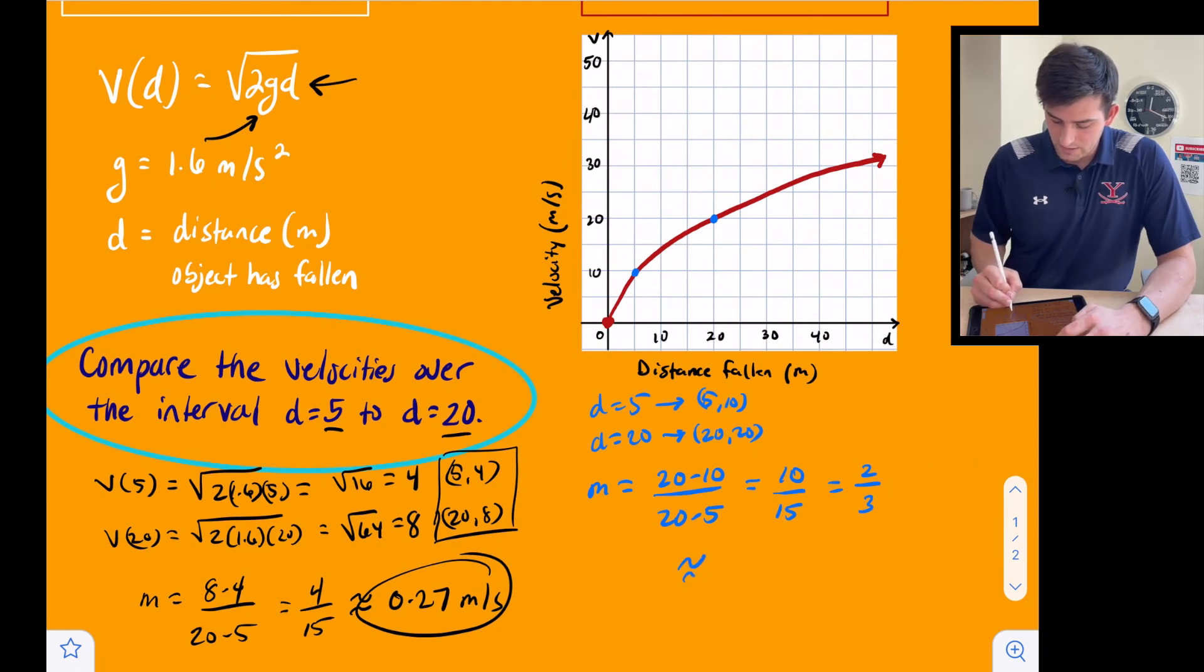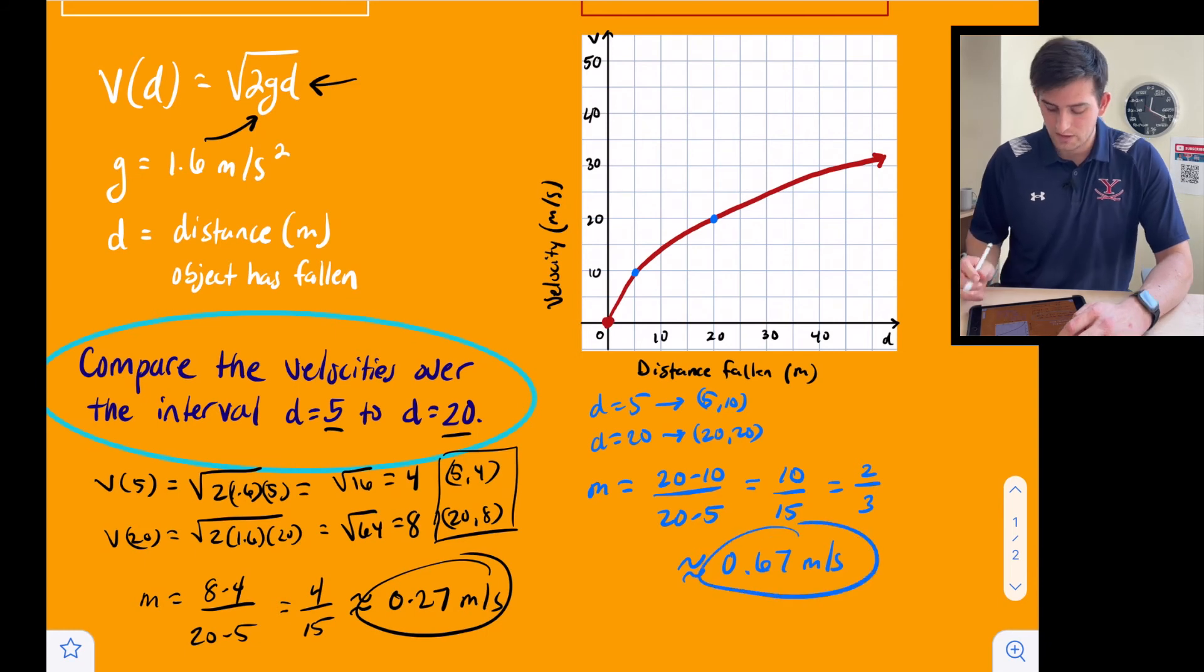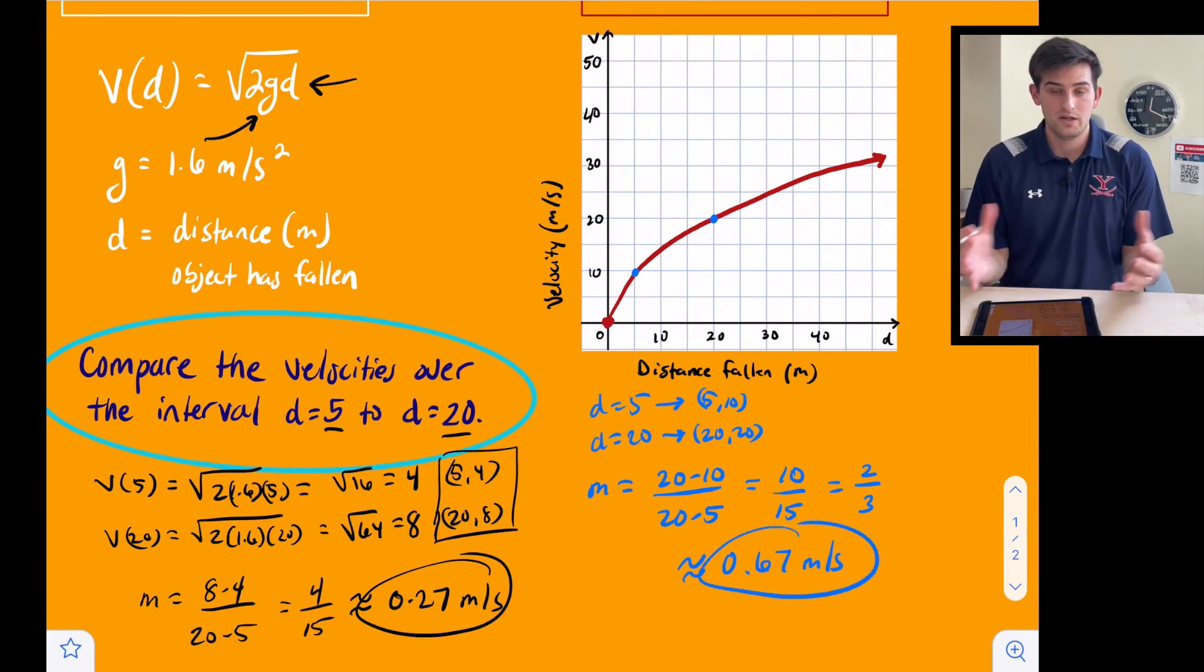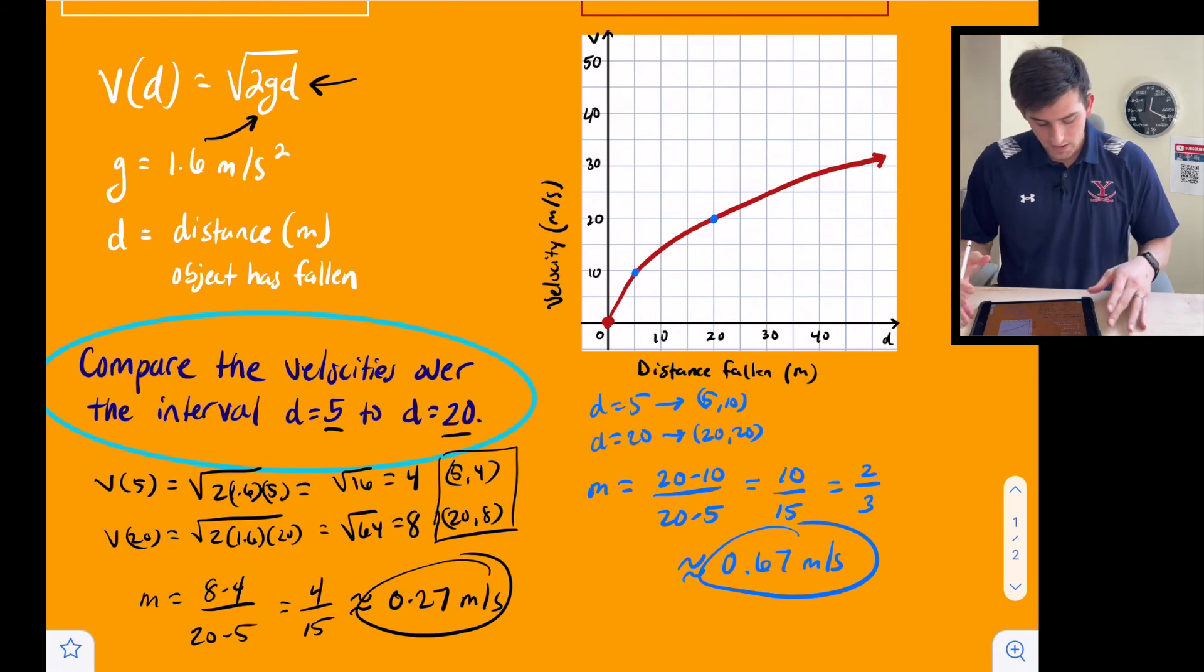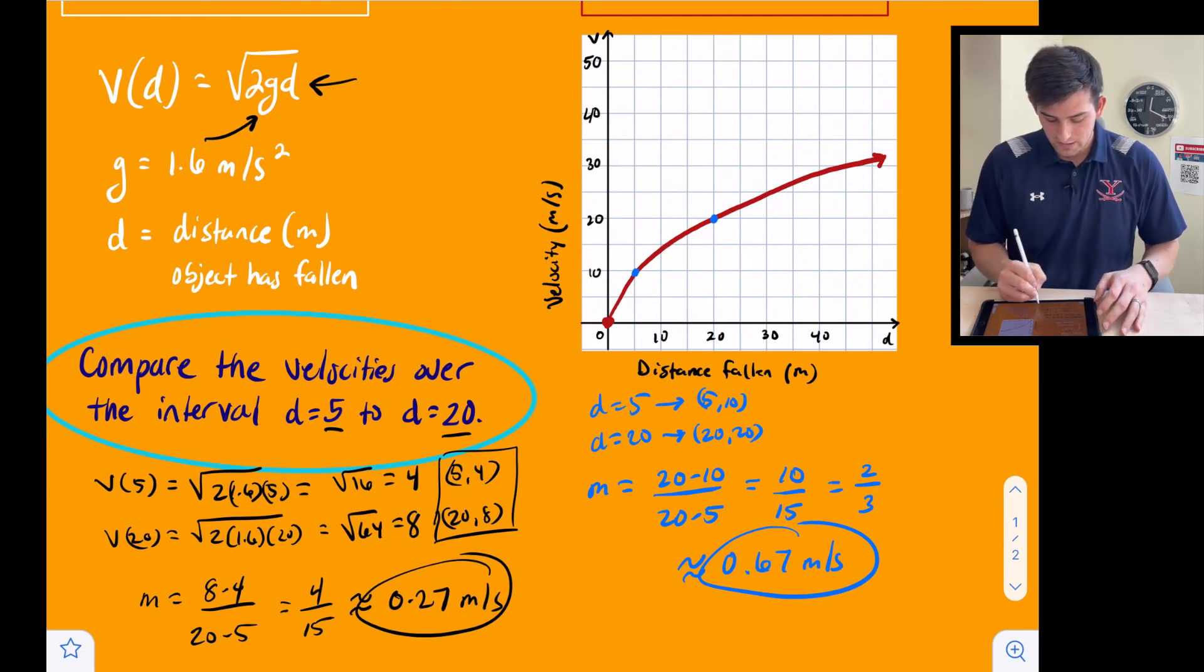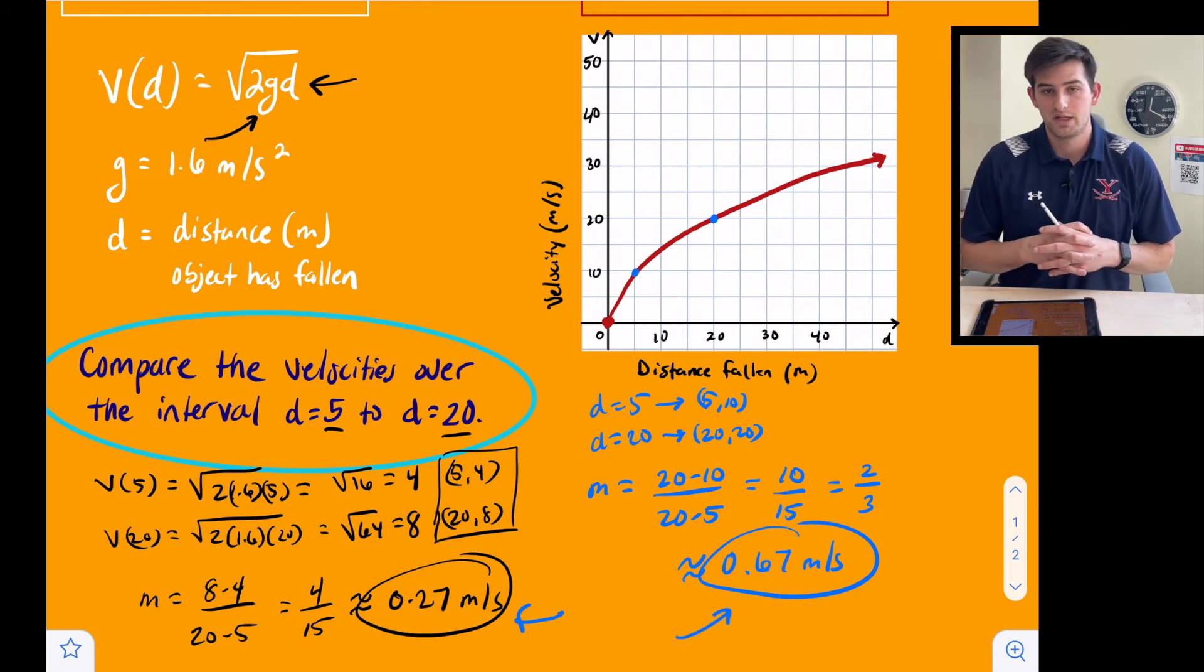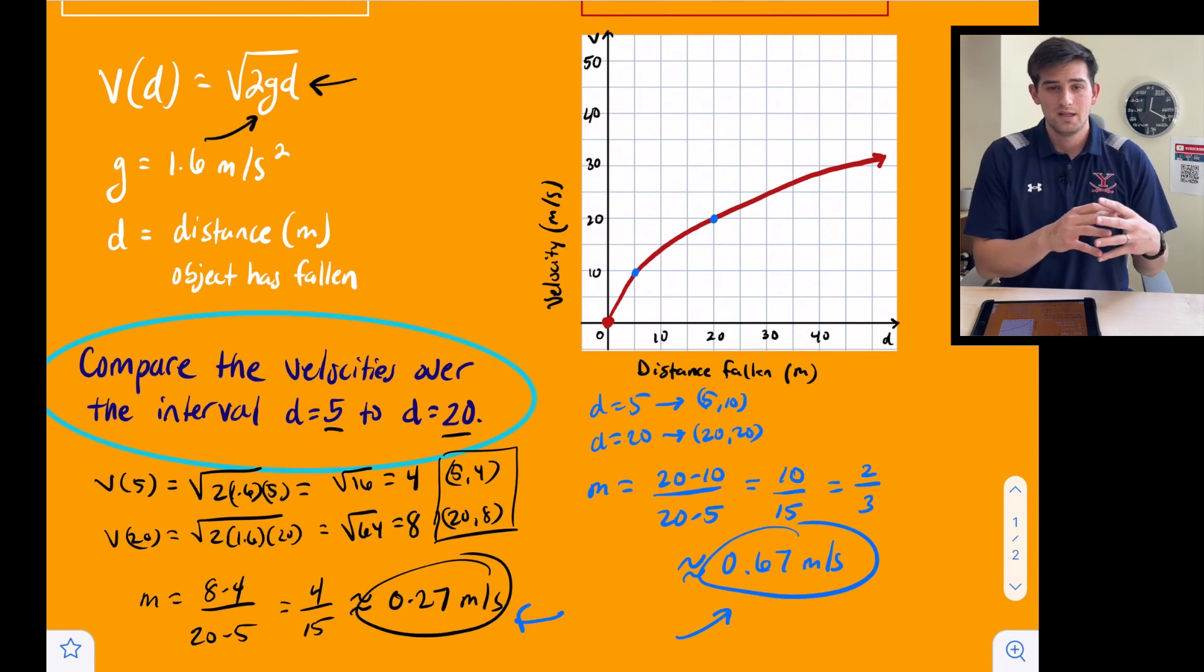That would be approximately 0.67 meters per second. Now we can interpret and compare these two average rates of change or these average velocities. On the moon we had 0.27 meters per second, and on earth 0.67 meters per second. We are comparing between the distance of 5 meters and 20 meters.